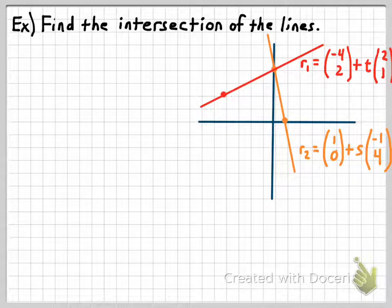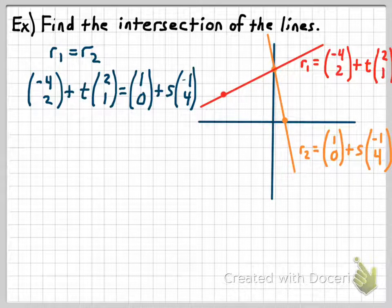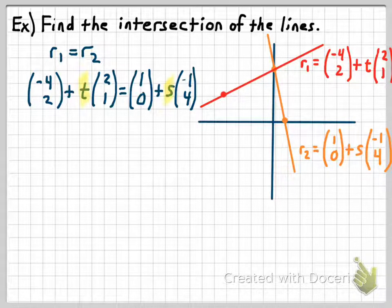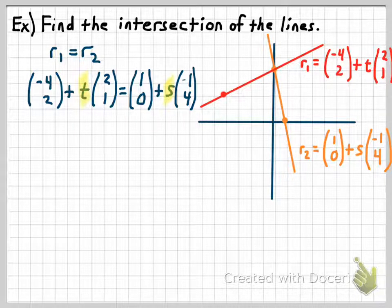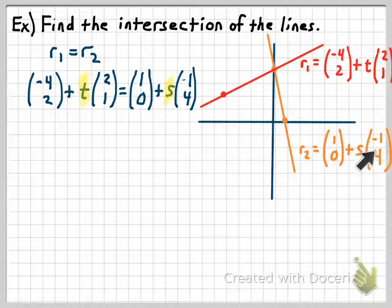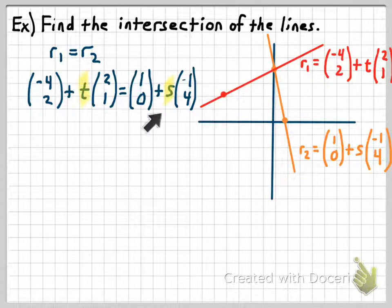Setting R1 equal to R2 gives us this equation. The key is finding whether there's a value of T and S that would make these two equations equal to one another. If that value exists, the lines intersect and we can find the intersection. If there is no such value for S and T, the lines are parallel, because in two dimensions that's the only other choice. We happen to know these lines can't be parallel because their directions are not scalar multiples of one another — (2, 1) is not a scalar multiple of (negative 1, 4). So we already know there's going to be a value of S and T that makes these equations equal, and we're going to find it now.